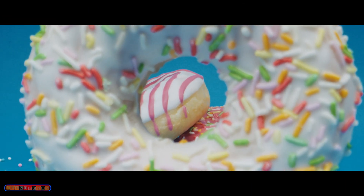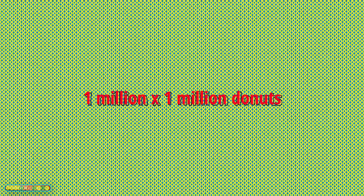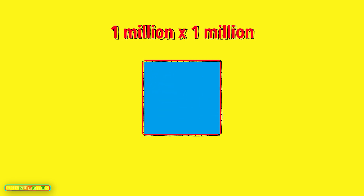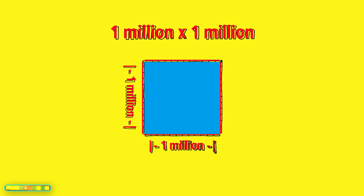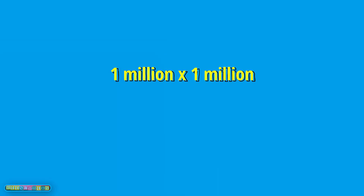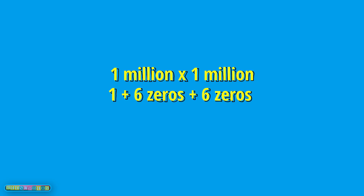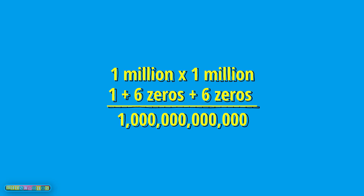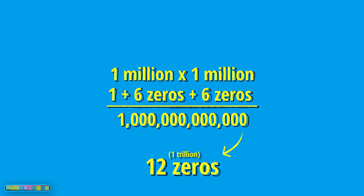When we multiply 1 million times 1 million, we simply get a 1 followed by 6 plus 6, or 12 zeros — 1 followed by 12 zeros. That's 1 trillion.